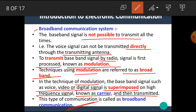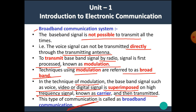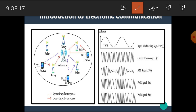This system is known as the broadband communication system. An example of the broadband communication system is mobile communication. Here the modulation process is shown: this is the original signal having a lower frequency, and this is a carrier signal having a higher frequency. The carrier signal is modulated with the original signal and then transmitted. There are various types of modulation techniques. This diagram shows amplitude modulation, frequency modulation, and phase modulation.